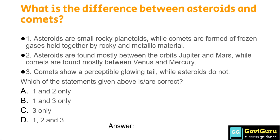What is the difference between asteroids and comets? Point 1: asteroids are small rocky planetoids while comets are formed of frozen gases held together by rocky and metallic material. Point 2: asteroids are found mostly between the orbits of Jupiter and Mars, while comets are found mostly between Venus and Mercury. Point 3: comets show a perceptible glowing tail while asteroids do not. Which of these statements are correct? Option A: 1 and 2 only, Option B: 1 and 3 only, Option C: 3 only, Option D: 1, 2 and 3. The correct answer is Option C, 3 only.